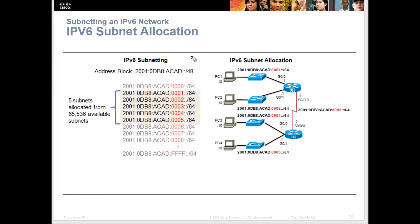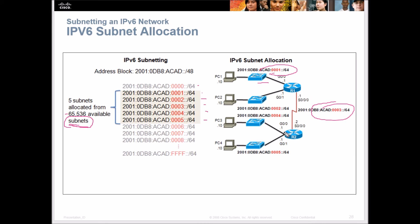When we allocate IPv6 subnets, our first subnet is 0001. That gives us five subnets allocated from the 65,536 available. We've reserved zero and started with 0001, 0002, 0003, 0004, 0005 — assigning each one of those subnets. Now we've got those broken down.